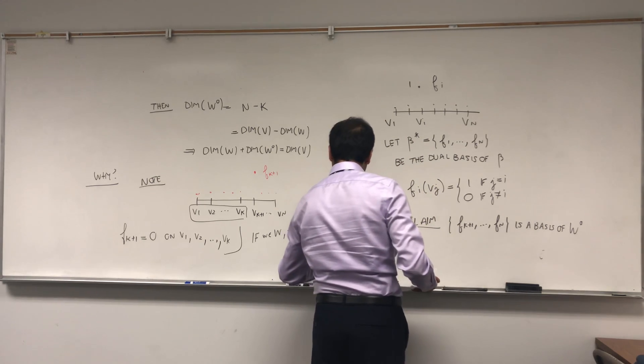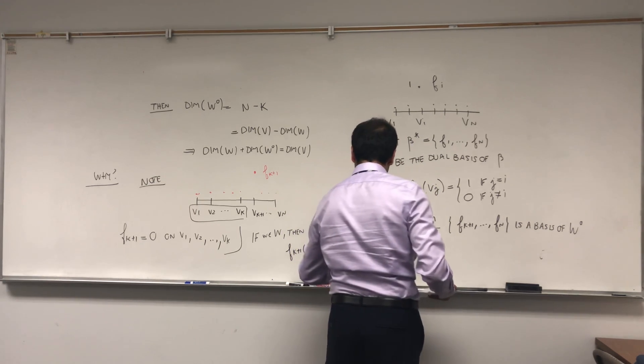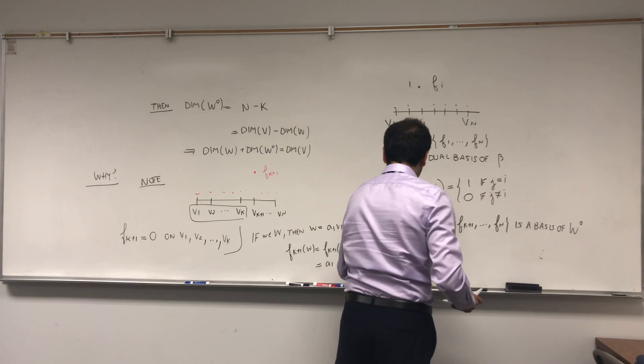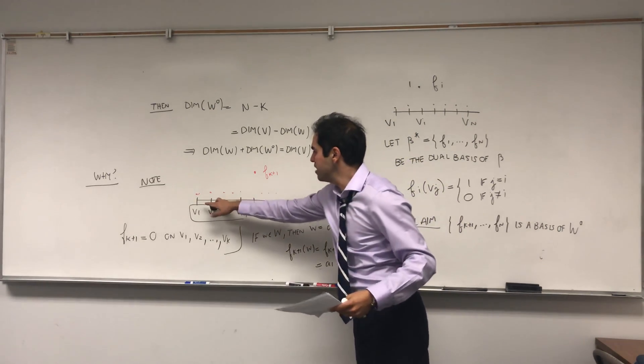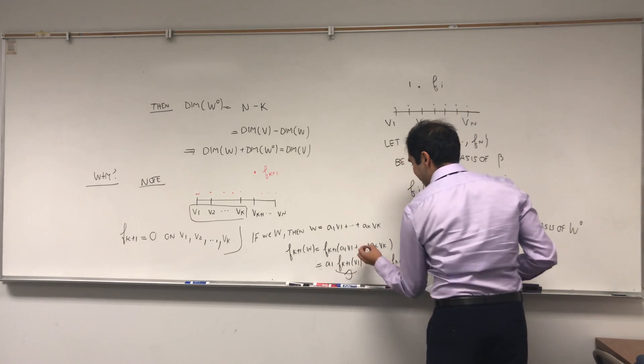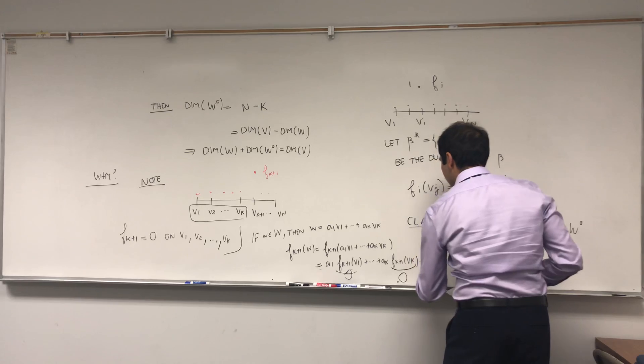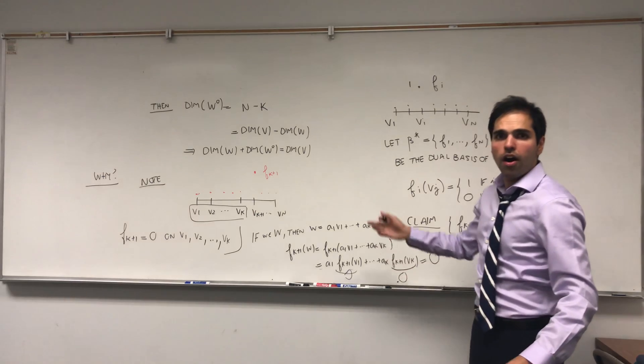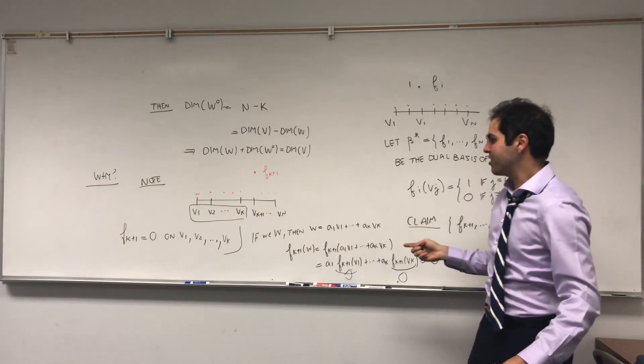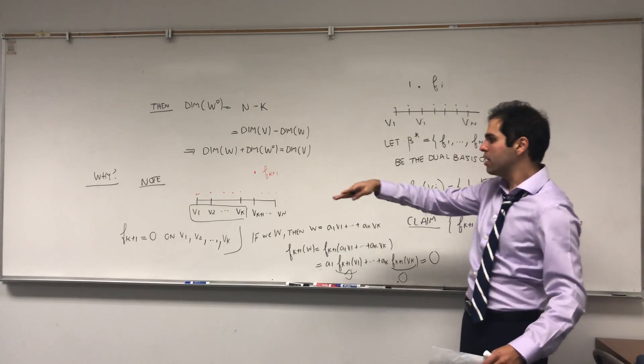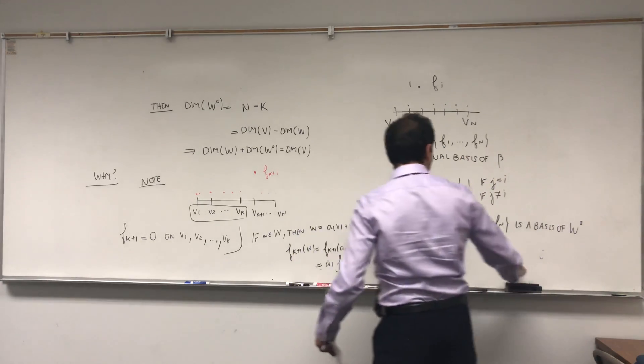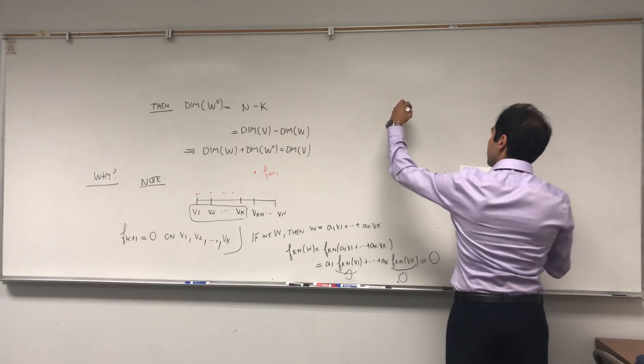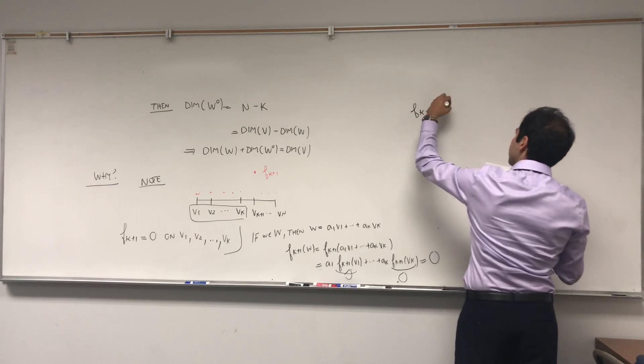And that's a1 Fk plus one of v1 plus dot dot dot plus ak Fk plus one of vk. But we just said Fk plus one is zero on all those vectors, so this is zero, the second one is zero, all those ones are zero. So this is zero. In particular, Fk plus one equals zero for any arbitrary vector in w, so Fk plus one annihilates w, so it is in w naught.